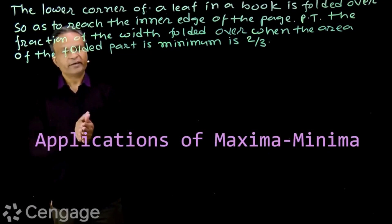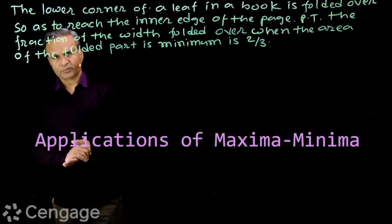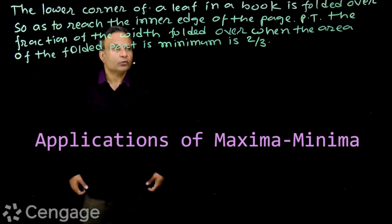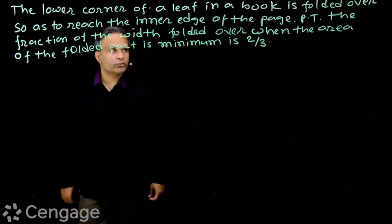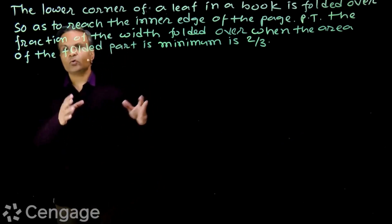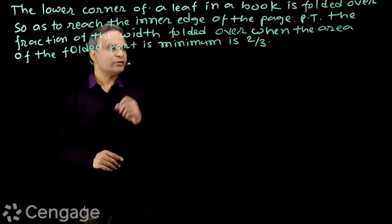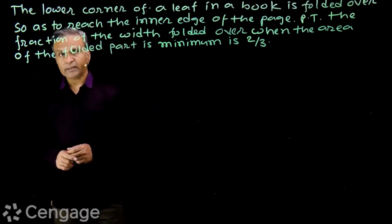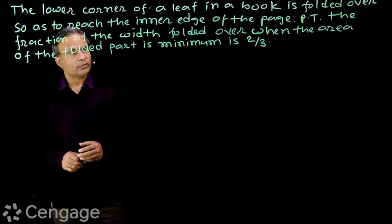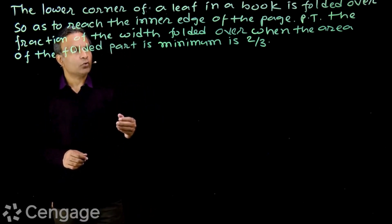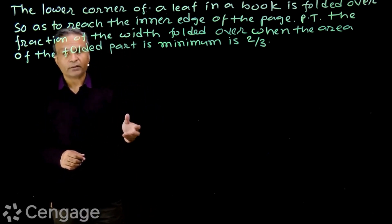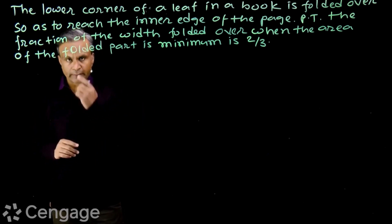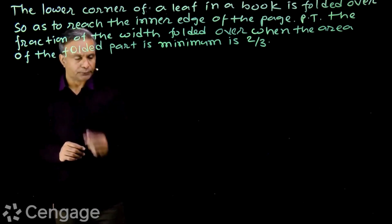Look at this very interesting question: the lower corner of a leaf in a book is folded over so as to raise the inner edge of the page. Then prove that the fraction of the width folded over, when the area of the folded part is minimum, is 2 upon 3.